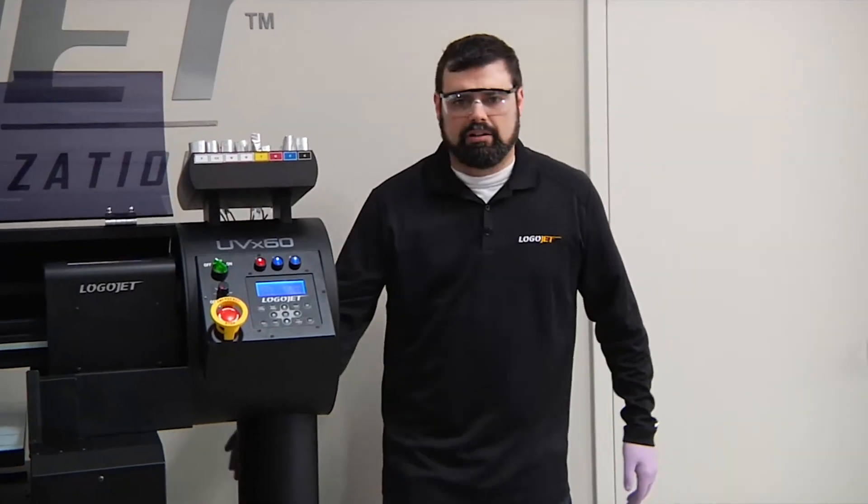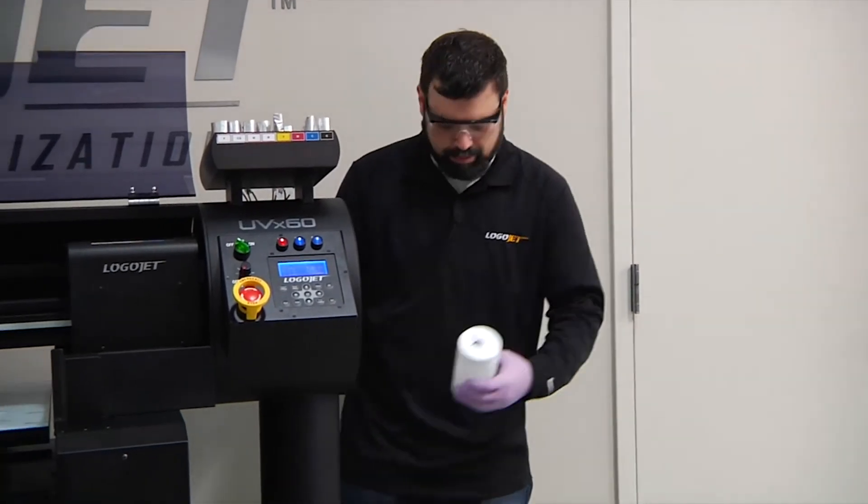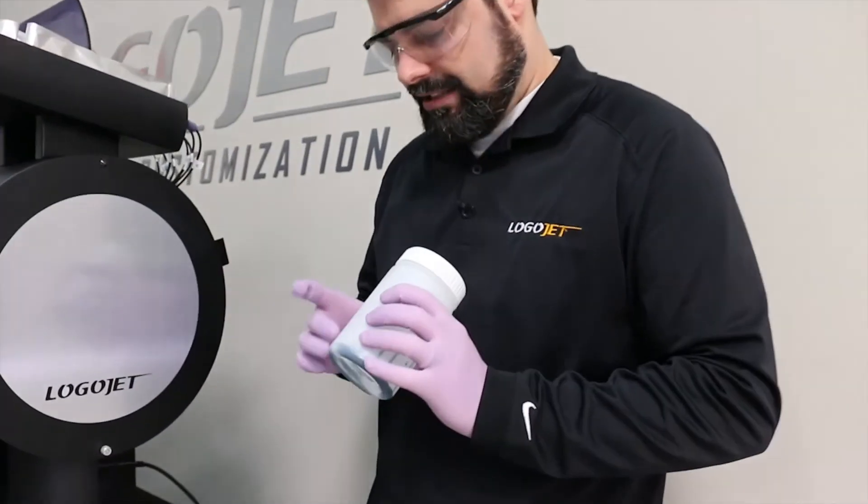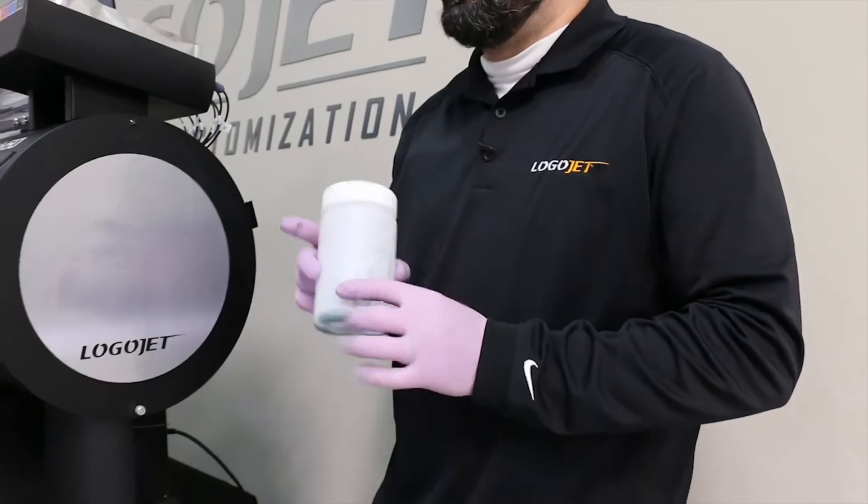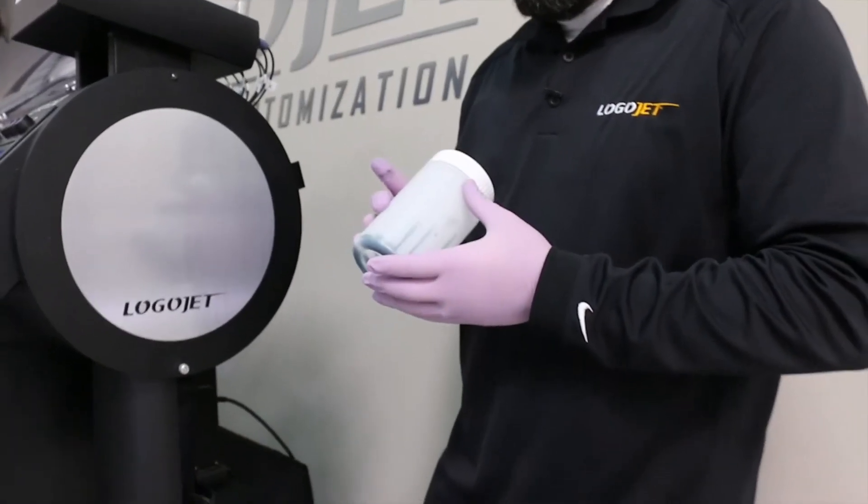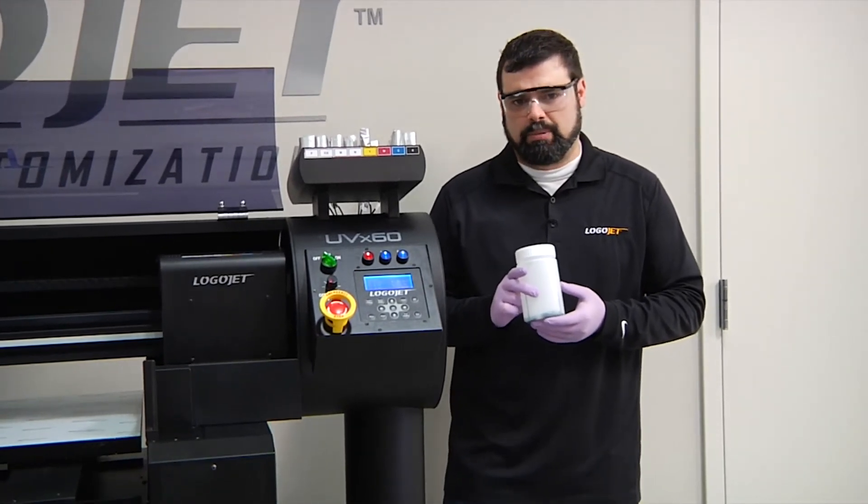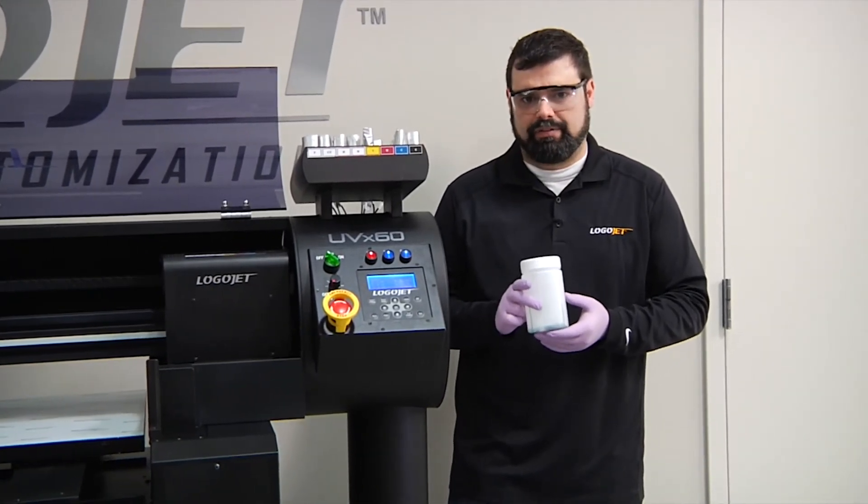The last thing we're going to look at is our waste bottle. You can remove this from the printer and check it out. If it has standing ink in it, you want to make sure that you dump this into a larger collection container. Do not dispose of this improperly. You want to make sure that you contact your local city hall and dispose of this in accordance with paints, solvents, and waste inks.